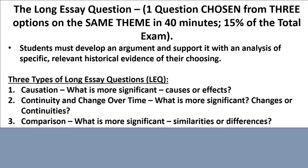So let's begin by looking at what has changed. You're given one question, but you choose from three options that are all on the same theme. You're given 40 minutes to write this essay. It should be the final thing you do on the APUSH exam, and it is 15% of the total exam. Students must develop an argument and support it with analysis of specific relevant historical evidence of their choosing.